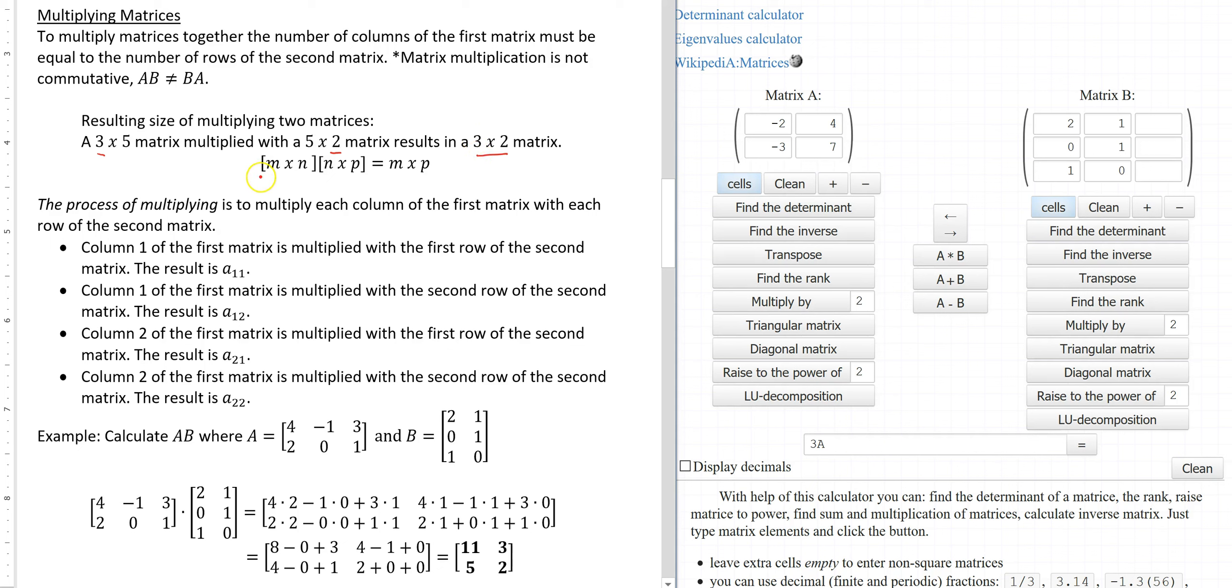In a general format if we look at a matrix that is M by N it needs to be multiplied with a matrix that has same number of rows as this one did columns. So the ends effectively consolidate and you're left with a matrix that is M times P or the number of rows of the first matrix times the number of columns of the second matrix.